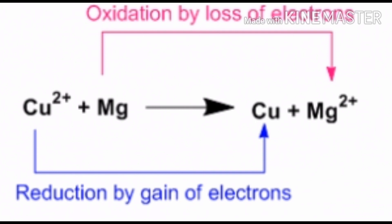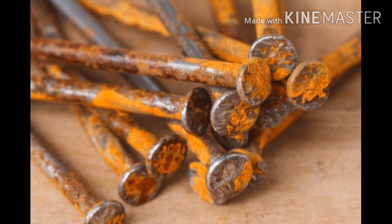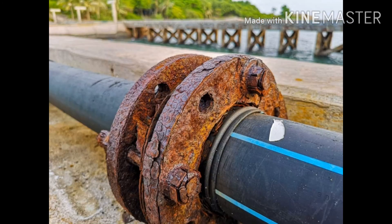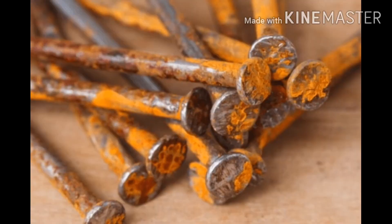Now we are going to learn the next concept, that is corrosion. Due to various components of the atmosphere, oxidation of metal takes place, which results in damage of the metal. This damage is called corrosion. For example, iron rusts or turns reddish in color due to the formation of iron oxide — this is called corrosion of iron. That means destruction of metal due to reaction of metal with oxygen is called corrosion.